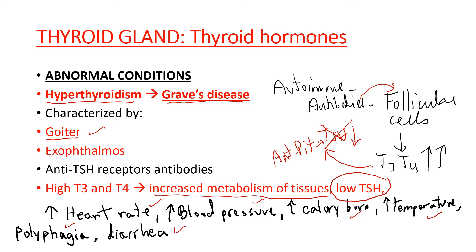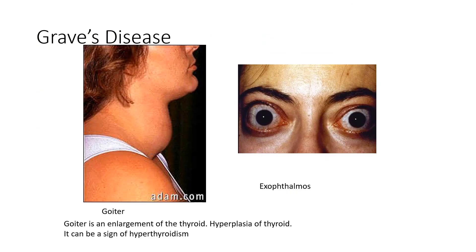Another common sign of hyperthyroidism is exophthalmos. Exophthalmos is caused by an increase in connective tissue behind the eyeballs, which pushes the eyeballs out, creating what is also called puffy eyes. So puffy eyes, exophthalmos, and goiter are signs of hyperthyroidism or Graves' disease.